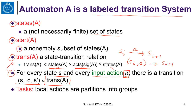Input-output automata also have a notion of tasks. Tasks are a grouping of actions — you group together locally controlled actions and say they are performed by a task. For example, output action send(m1) is different from output action send(m2), but we can say the set of all sends is a task. This is what we mean by locally controlled actions being partitioned into groups — this applies to internal actions and output actions.